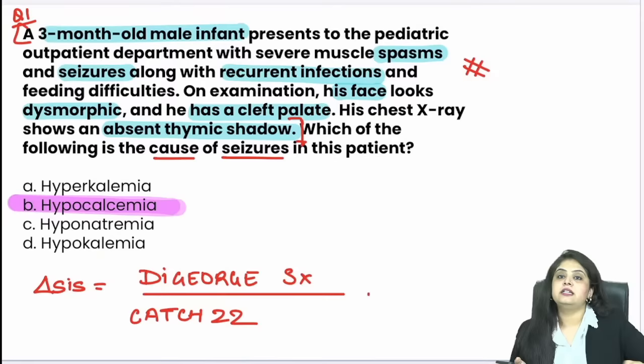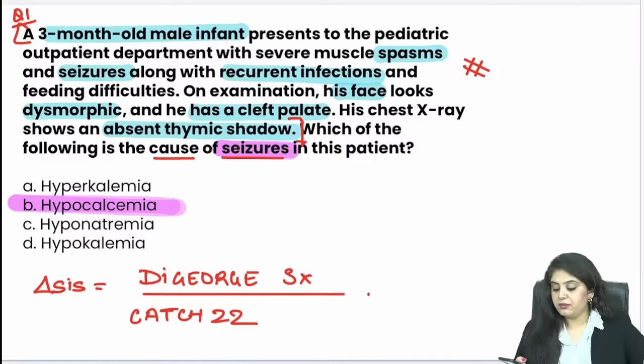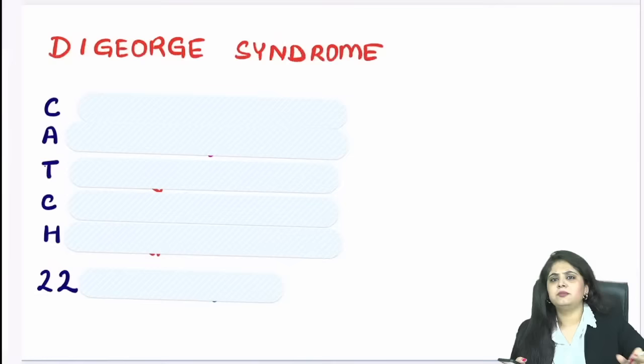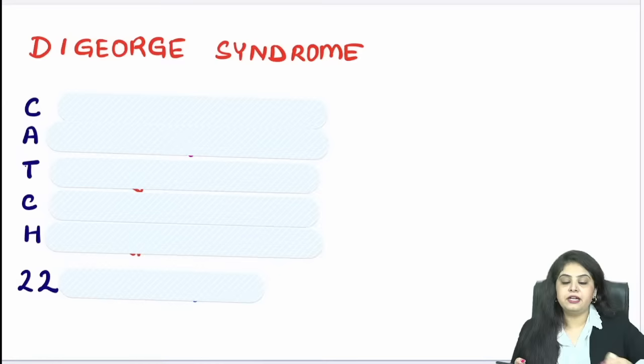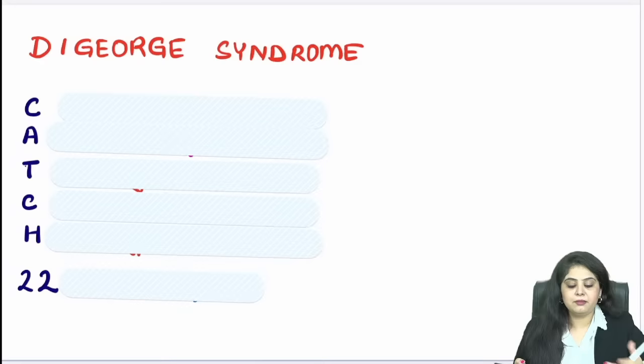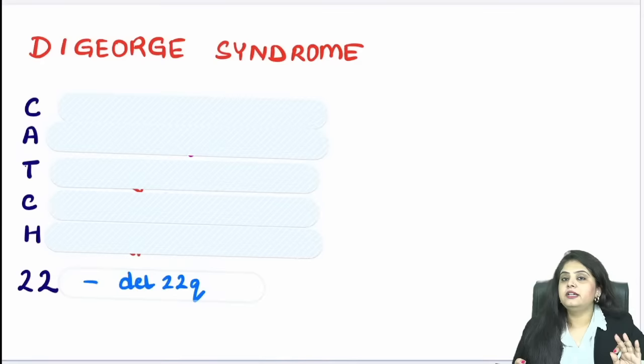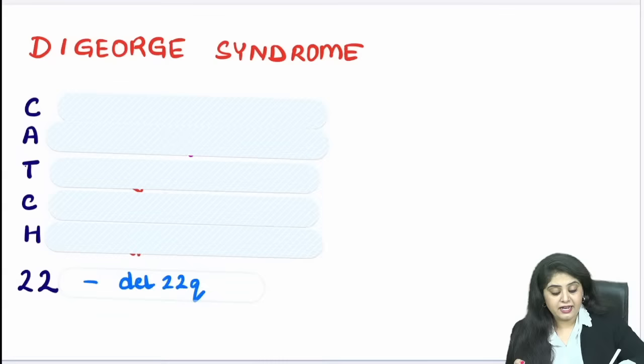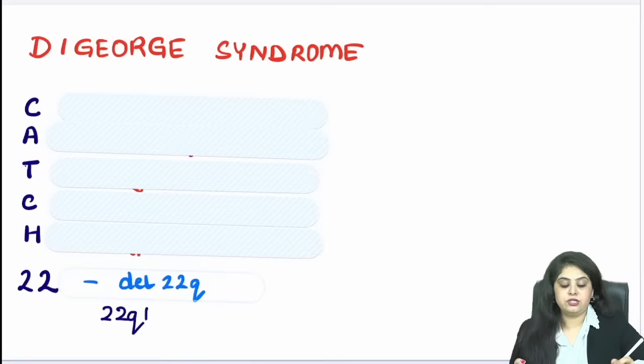There is a decrease in calcium levels, and that is responsible for the seizures. Now, who can recall the CATCH-22 mnemonic? This is the fill-in-the-blanks — I have hidden some information and you will put it out. In CATCH-22, the deletion is deletion 22q. For INICET students, remember it is deletion 22q11. It is the 22q11 deletion that is present.